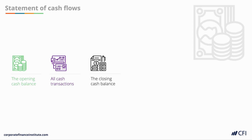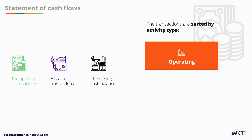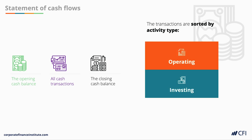The difference between the bank statement and the statement of cash flows is that the cash transactions are sorted by activity type. On the statement, cash flows are sorted by operating activities, investing activities, and financing activities.